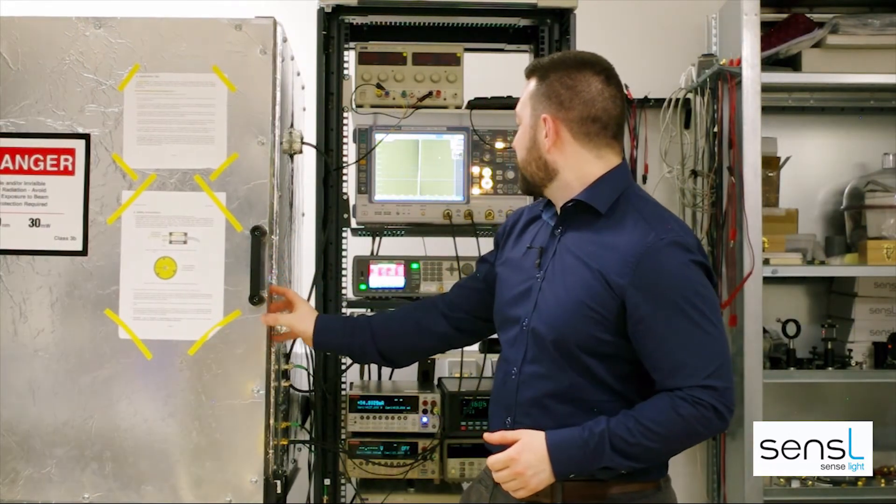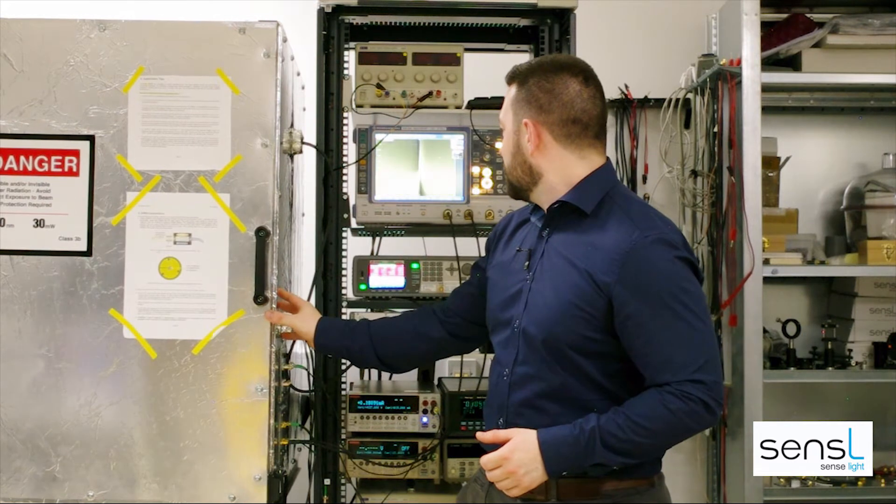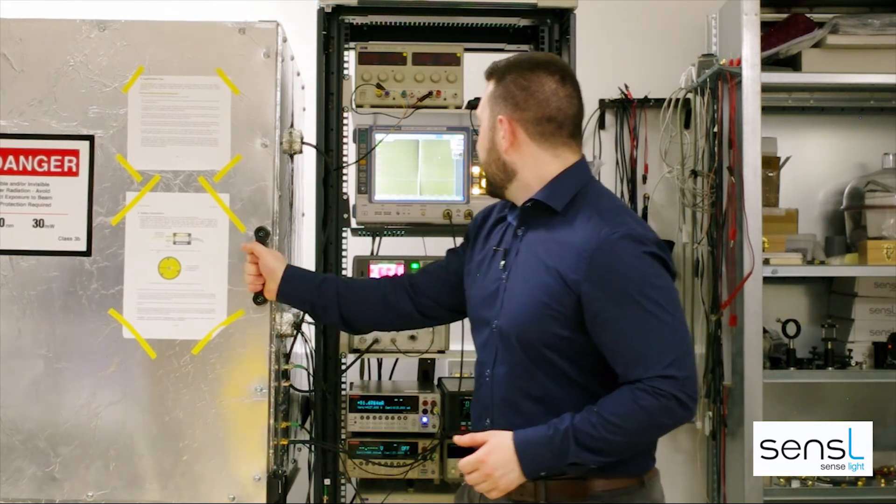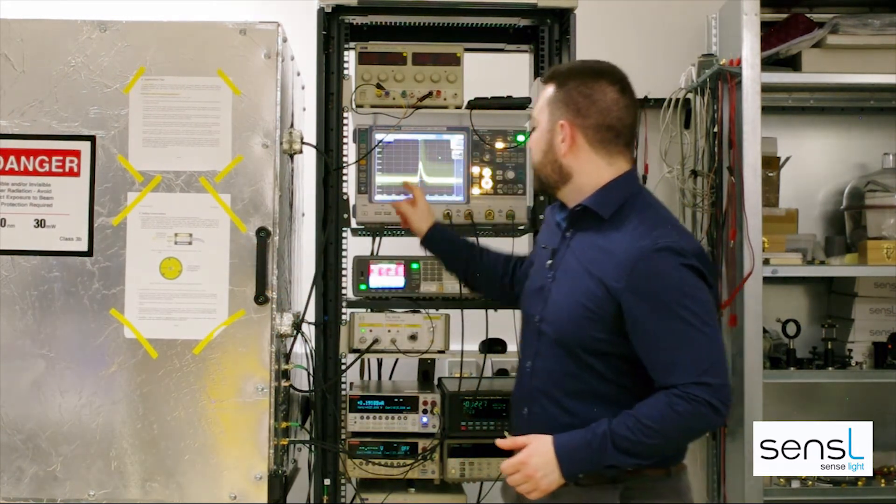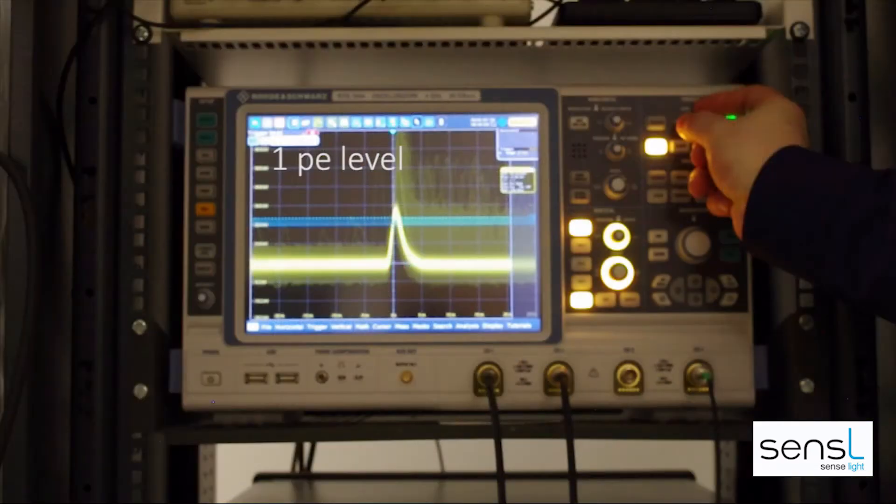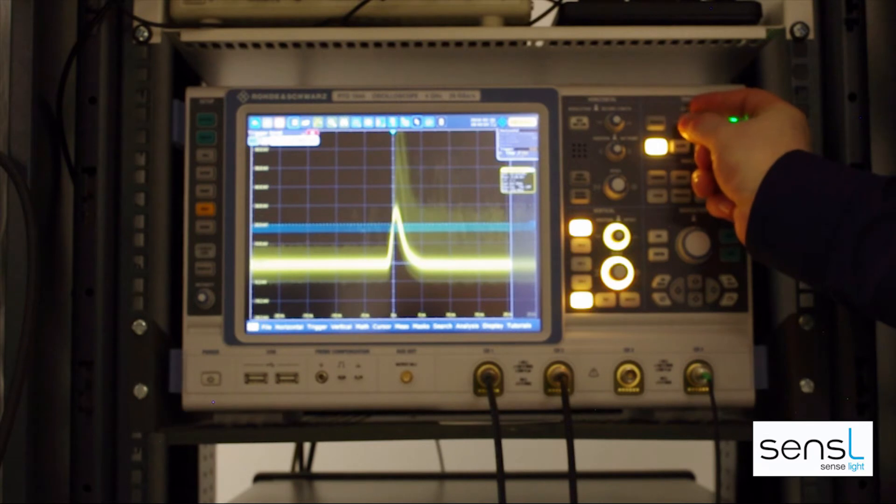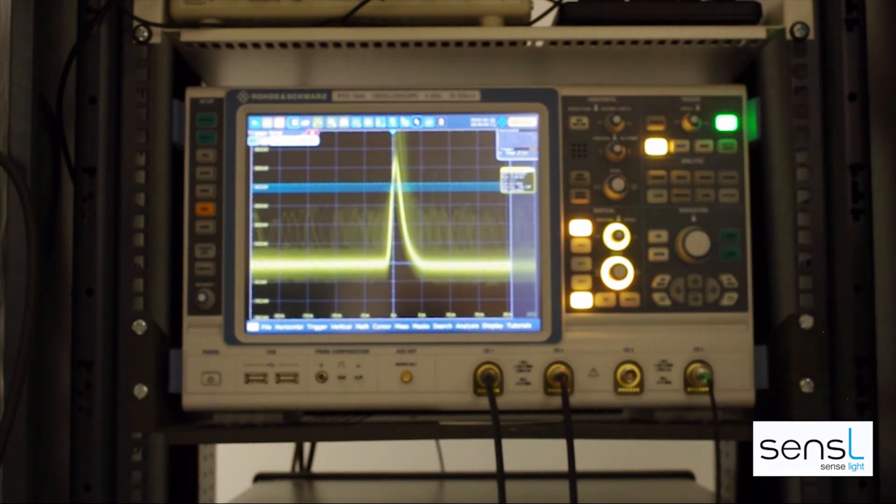So we can see that the signal is saturated but as we close, we can see just the response to the single photon event. If I increase the level, we can see there's also a double amplitude pulse. This is a response to phenomena such as crosstalk.